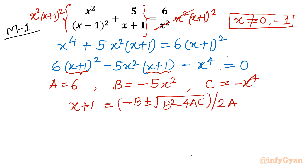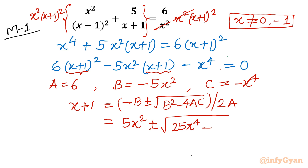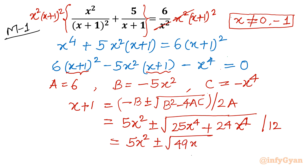Substituting: in place of B we write −5x², so −B becomes 5x². Then B² = 25x⁴, and −4AC = −4·6·(−x⁴) = +24x⁴. So under the root we have 25x⁴ + 24x⁴ = 49x⁴, and √(49x⁴) = 7x². The expression becomes (5x² ± 7x²) / 12.